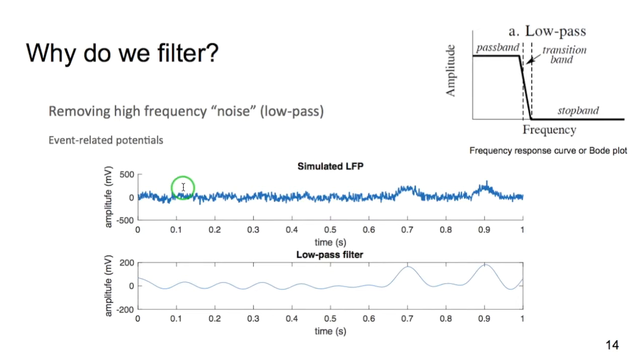So there are several types of filters. They can be identified by their frequency response curve or also called a Bode plot. So the amplitude of the signal that gets through the filter per frequency. And this particular filter presented here is a low pass filter. So the pass band is in the low frequency range. That is, low frequency information is allowed to pass through. And high frequency information is attenuated. It's in the stop band. Between the two, we have a transition band.